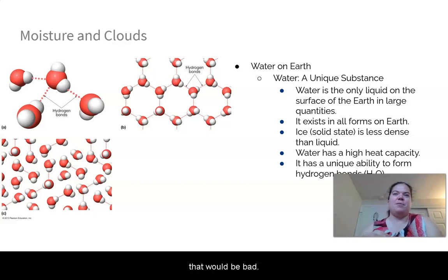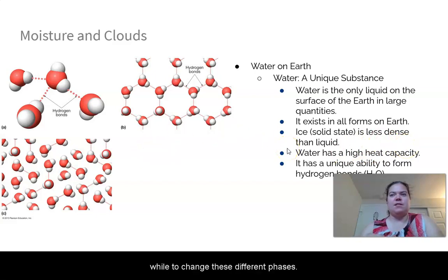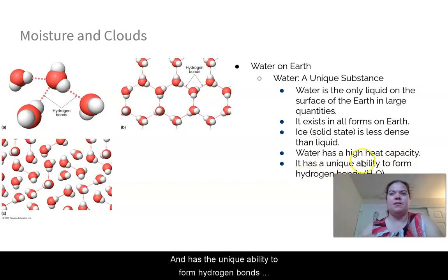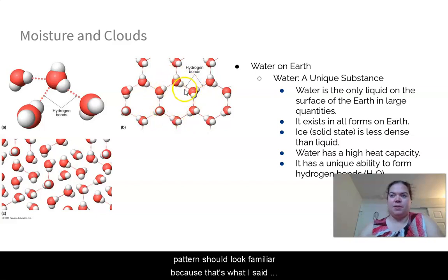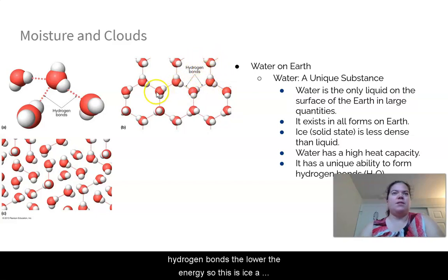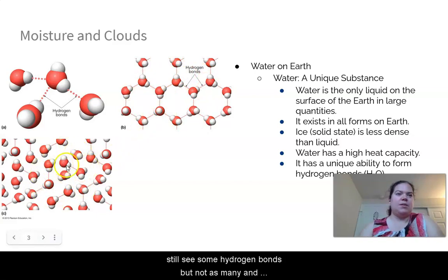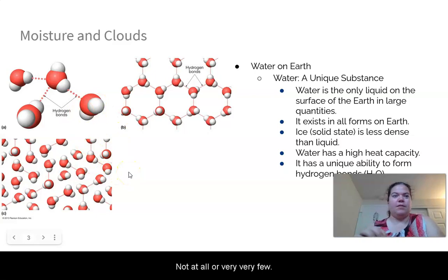If ice didn't float, lakes would freeze from the bottom and we wouldn't have any fish in the springtime. Water also has a high heat capacity, meaning it takes a while to change phases, and it has the unique ability to form hydrogen bonds. Water is H2O — two hydrogens, one oxygen — and those hydrogen bonds form between the oxygen and hydrogen. The crystalline pattern is what ice looks like under the microscope. More hydrogen bonds means a lower energy state, so ice is the lowest state. Liquid water has fewer hydrogen bonds, and gas has very few or none.